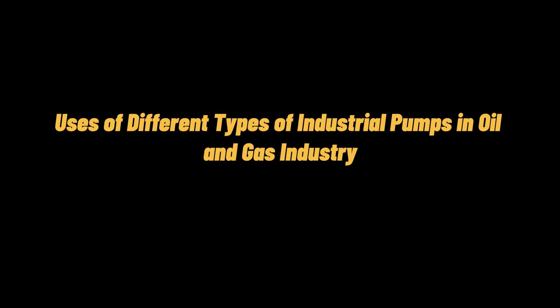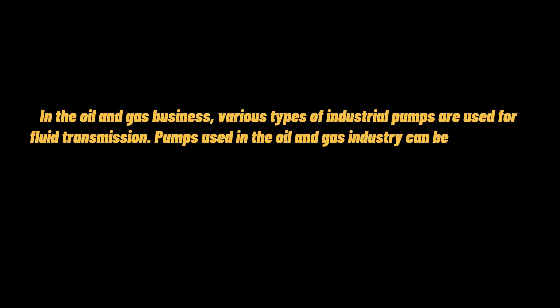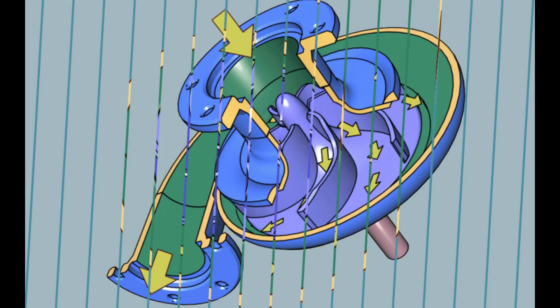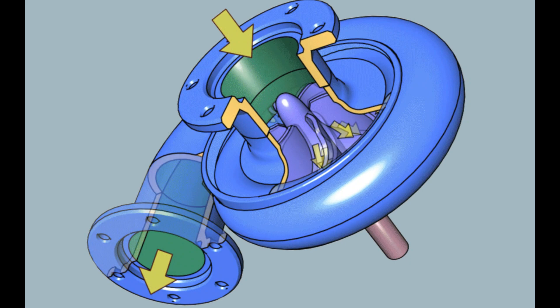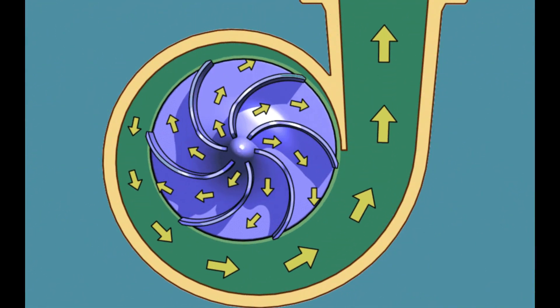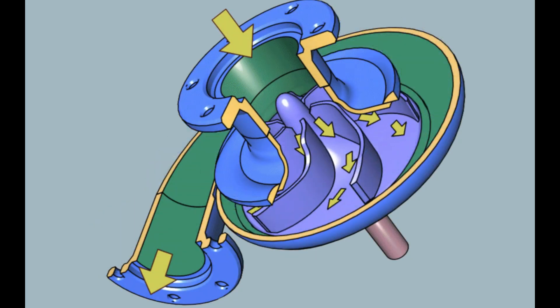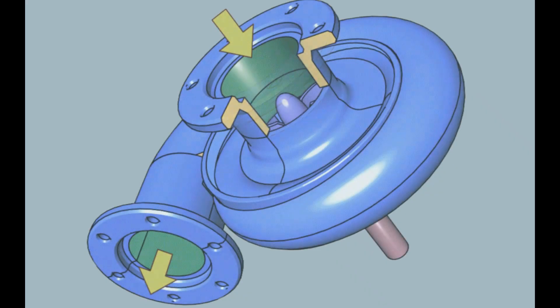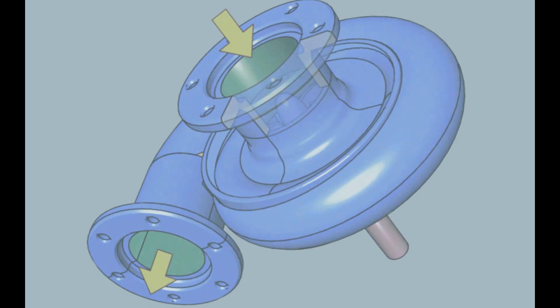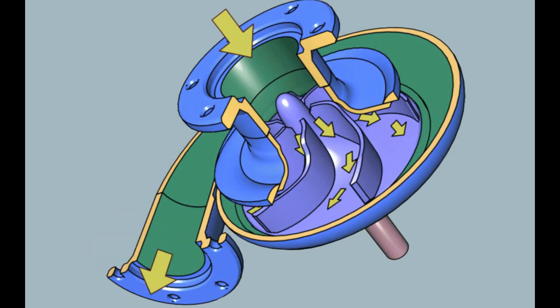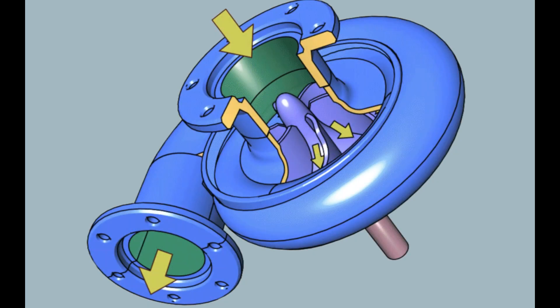Uses of Different Types of Industrial Pumps in Oil and Gas Industry. In the oil and gas business, various types of industrial pumps are used for fluid transmission, divided into six groups based on their design and construction. 1. Centrifugal Pumps: The most prevalent type of pump utilized in the oil and gas business. Centrifugal pumps employ centrifugal force to draw fluid into the pump's intake and force it through the discharge, with flow control valves regulating the pump's flow. Single-stage centrifugal pumps are primarily utilized for moving low-viscosity liquids that require high flow rates, and are often used as a component within a larger pump network.